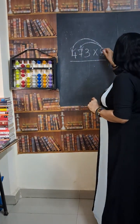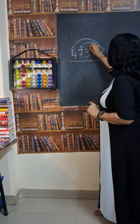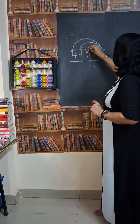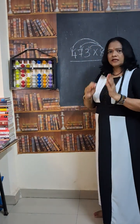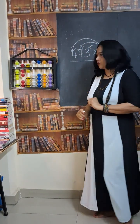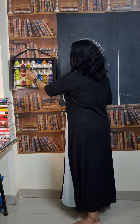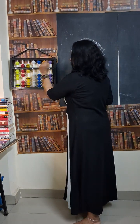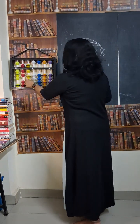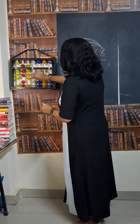Next step is 8 into 3. 8 times 3 is 24. We have to continue from where we stopped. 24.